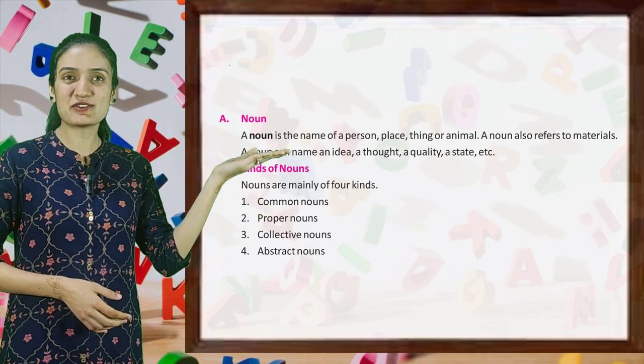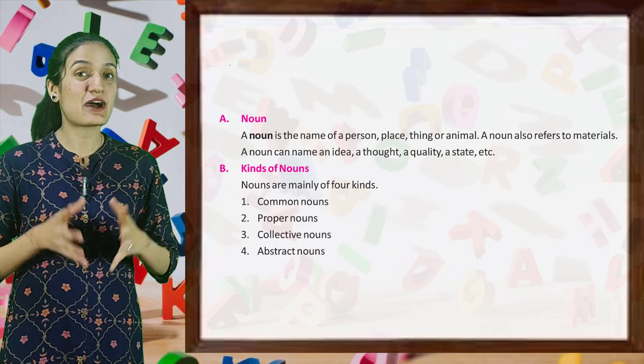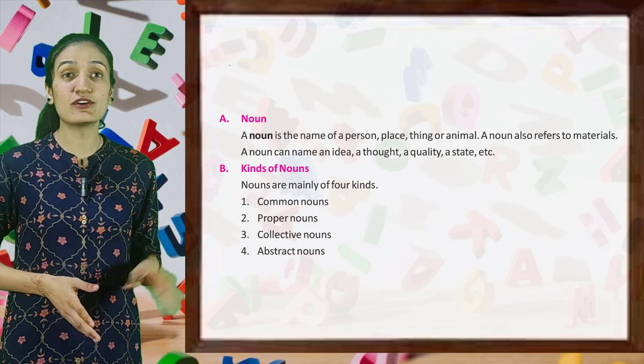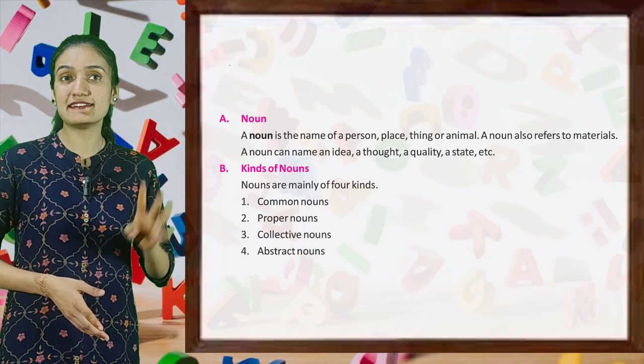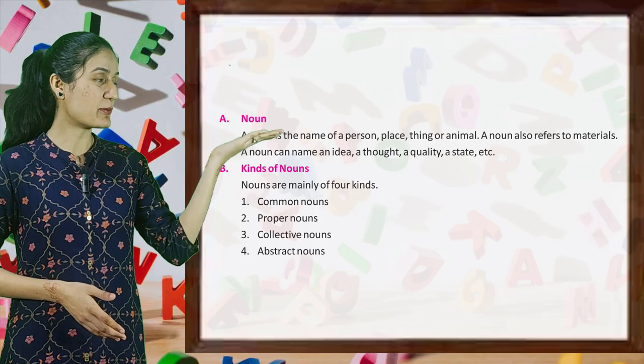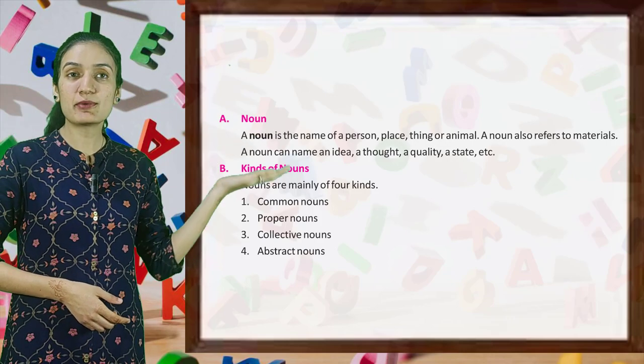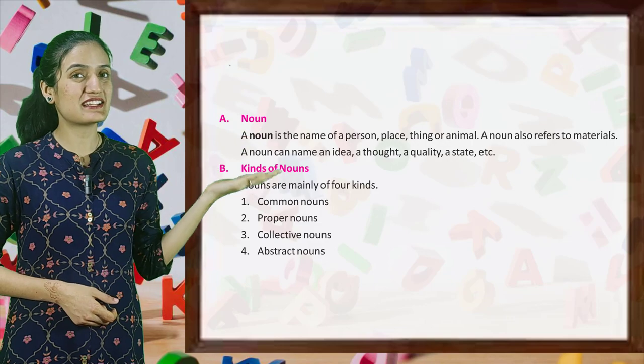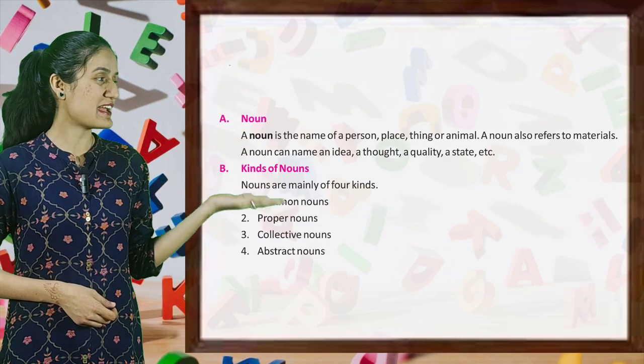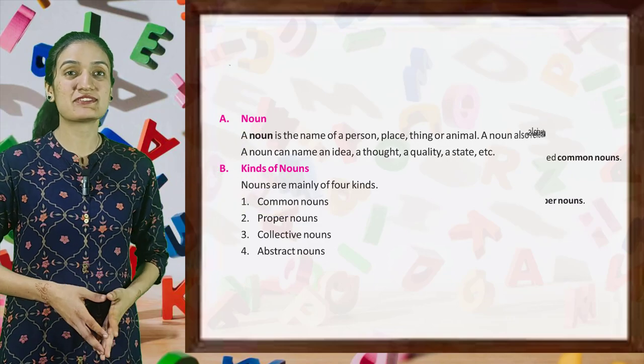Let's see the kinds of nouns. Nouns are mainly of four kinds: common noun, proper noun, collective noun, and abstract noun.